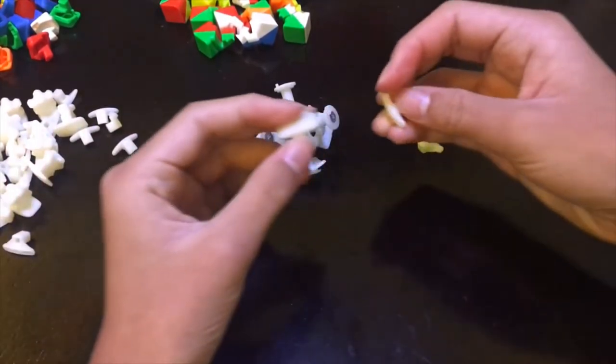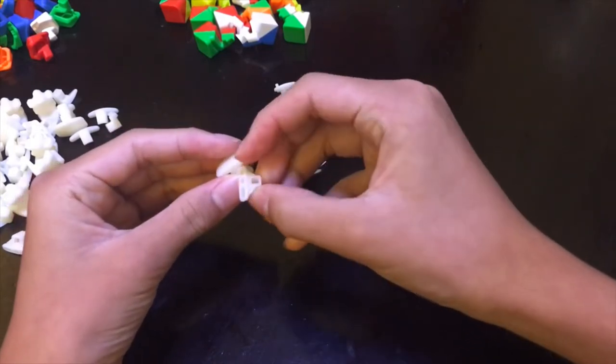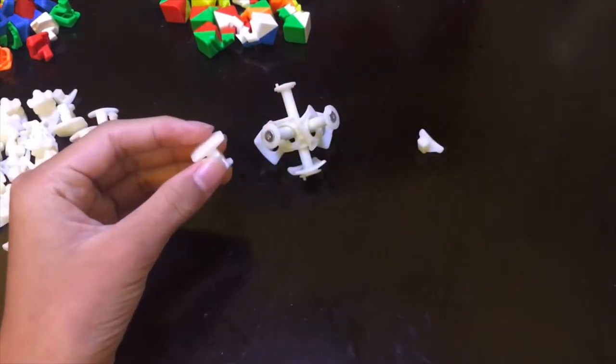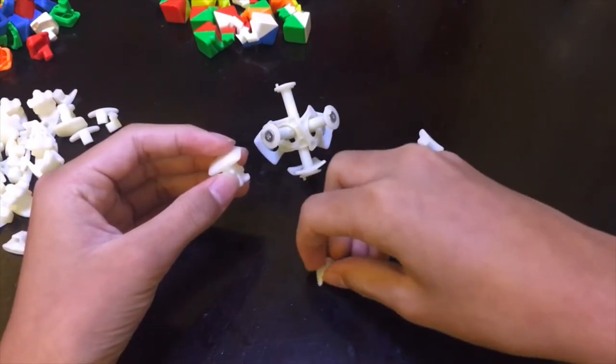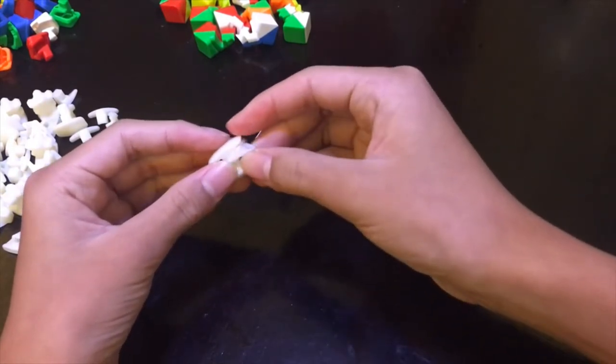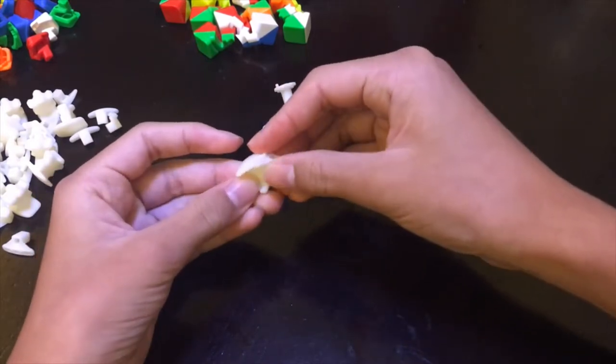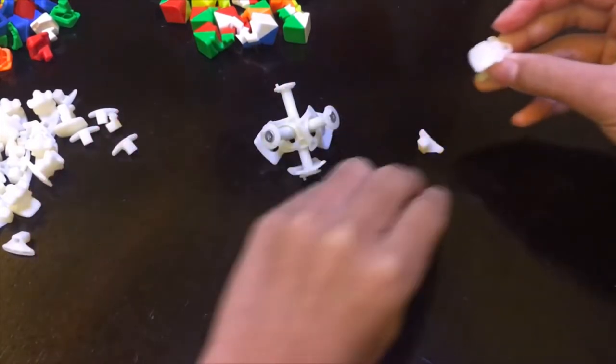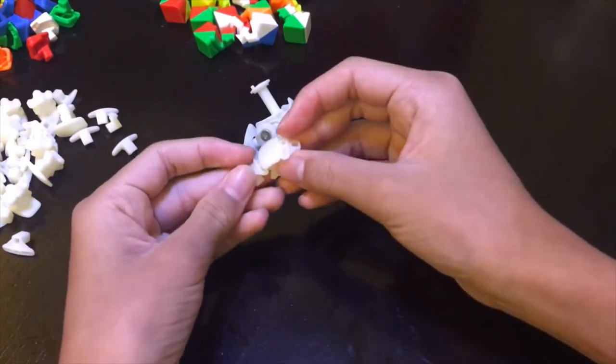And I've also noticed that this little piece actually fits with a piece like this, and every single piece is like this. Every single piece has a big piece fitting into a small piece just like that, but I have no idea how I can put it into the cube.